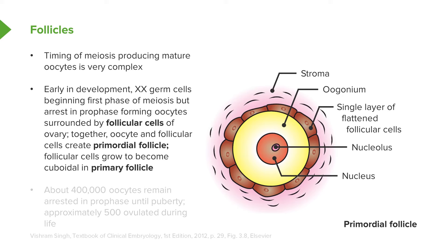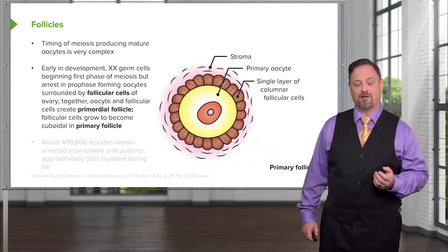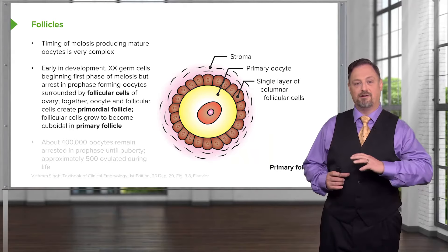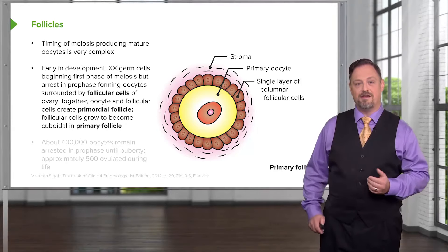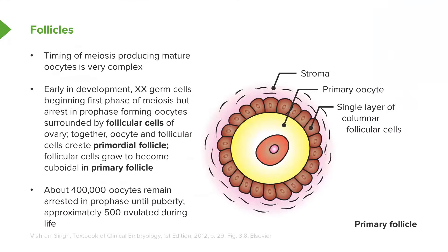Initially, these follicular cells are very thin and just surround and sustain the ovum. As they get signaled to mature, they're going to become a little bit more cuboidal and transition from a primordial follicle to a primary follicle. With a slightly thicker cell lining, those follicular cells will sustain the ovum and also anchor it within the ovary. Roughly 400,000 oocytes remain arrested in prophase for the entirety of a young woman's life until puberty, at which point these primary follicles can begin developing further and be shed one or two at a time.